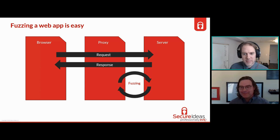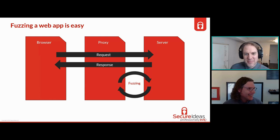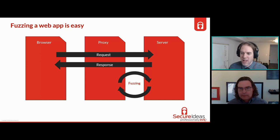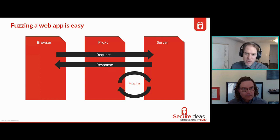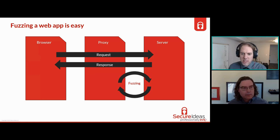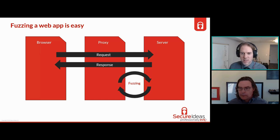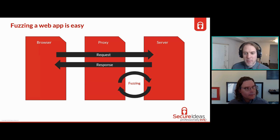We fuzz web apps all the time - we've been doing it forever. Fuzzing a web app is easy. We have the browser, we run it through our proxy - it would be Burp Suite or ZAP, or others. The request goes to the application server and the response comes back through the proxy to the browser. When we want to fuzz it, we go to our proxy, find that request, put it into the fuzzing tool in that proxy, set up our word list and substitutions, and it repeats those variations to the server.